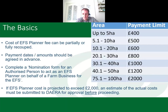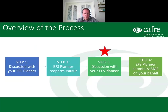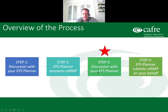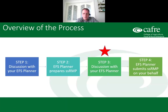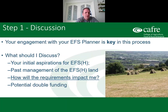Here's an overview of the four-step process. Step one: discussion with your EFS planner - your initial discussions. Step two: your planner prepares your plan. Step three: discussion with the EFS planner after the plan has been completed. Step four: the planner submits the plan to DAERA on your behalf. Step three has a red star to highlight its importance - if we get step three right, most other issues will rectify themselves.